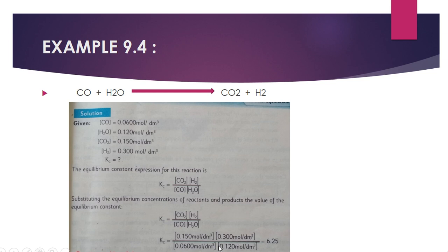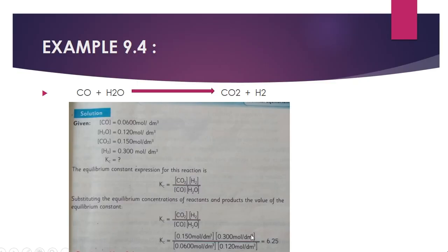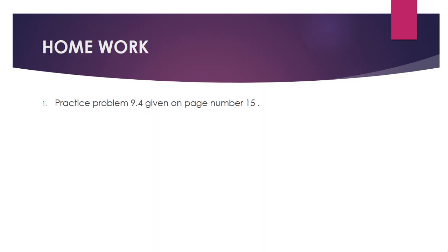Because the mole per decimeter cube are 2 above and 2 below. So all will cancel out. And there will be no unit for this case. Same for the previous one. Here the power was 2. So 2 mole per decimeter cube here and 2 here. So both get cancel out. No units in both cases.